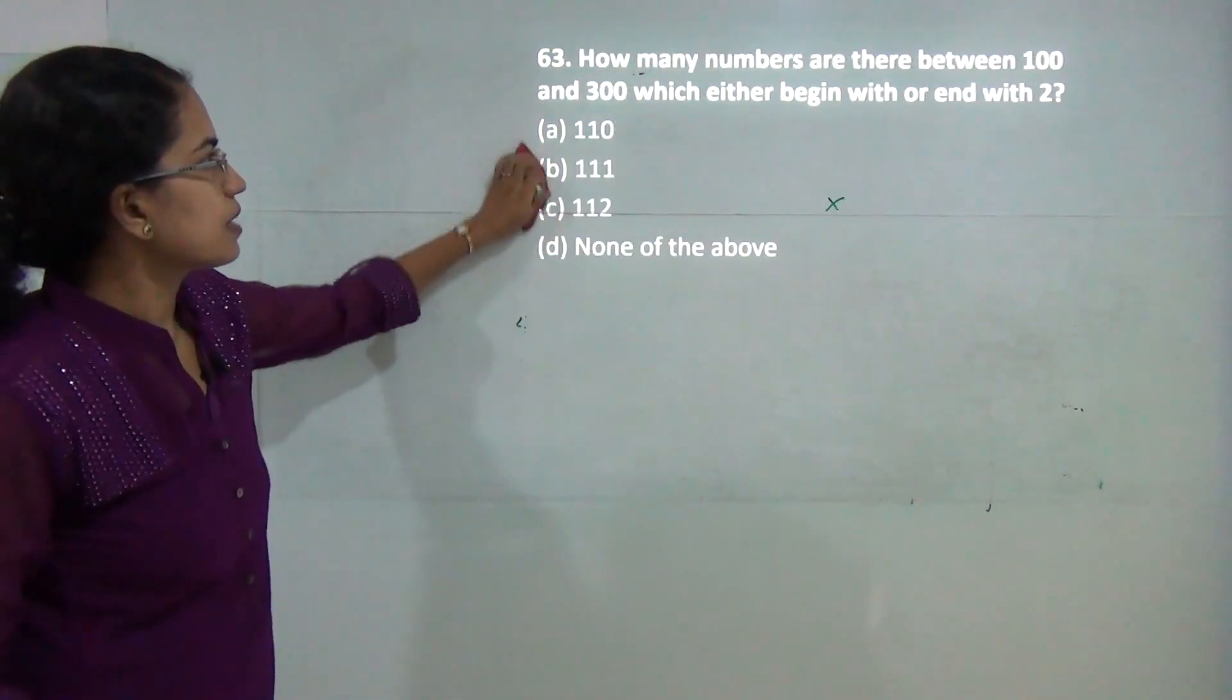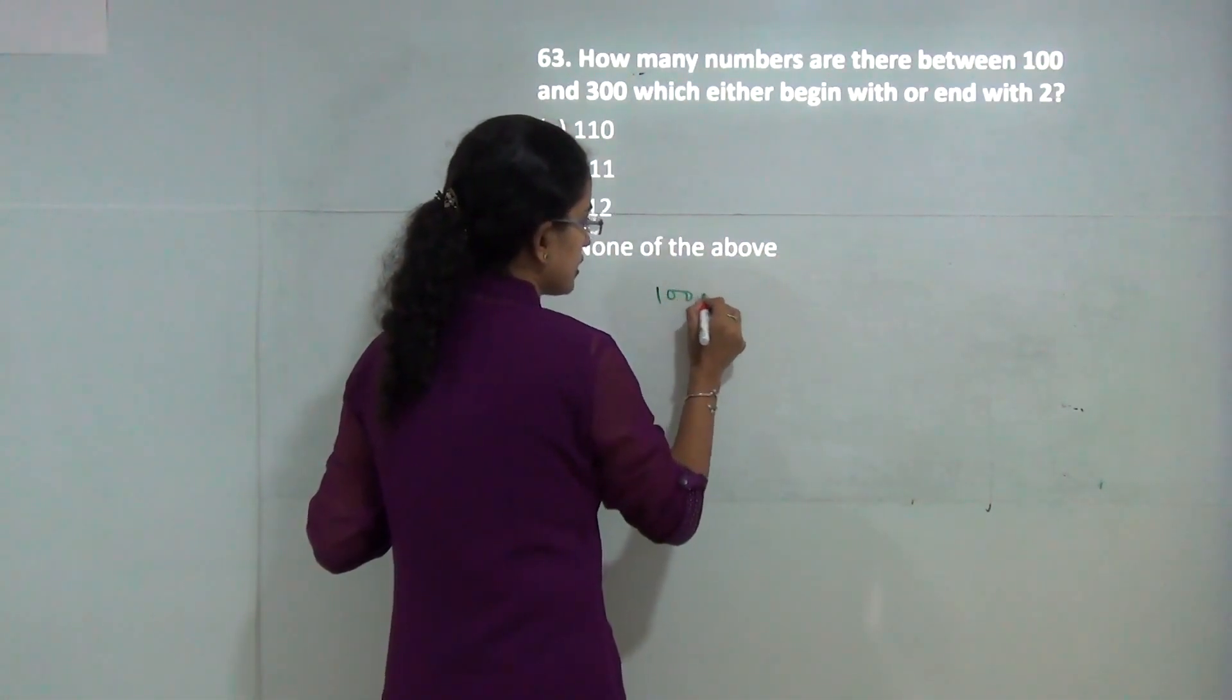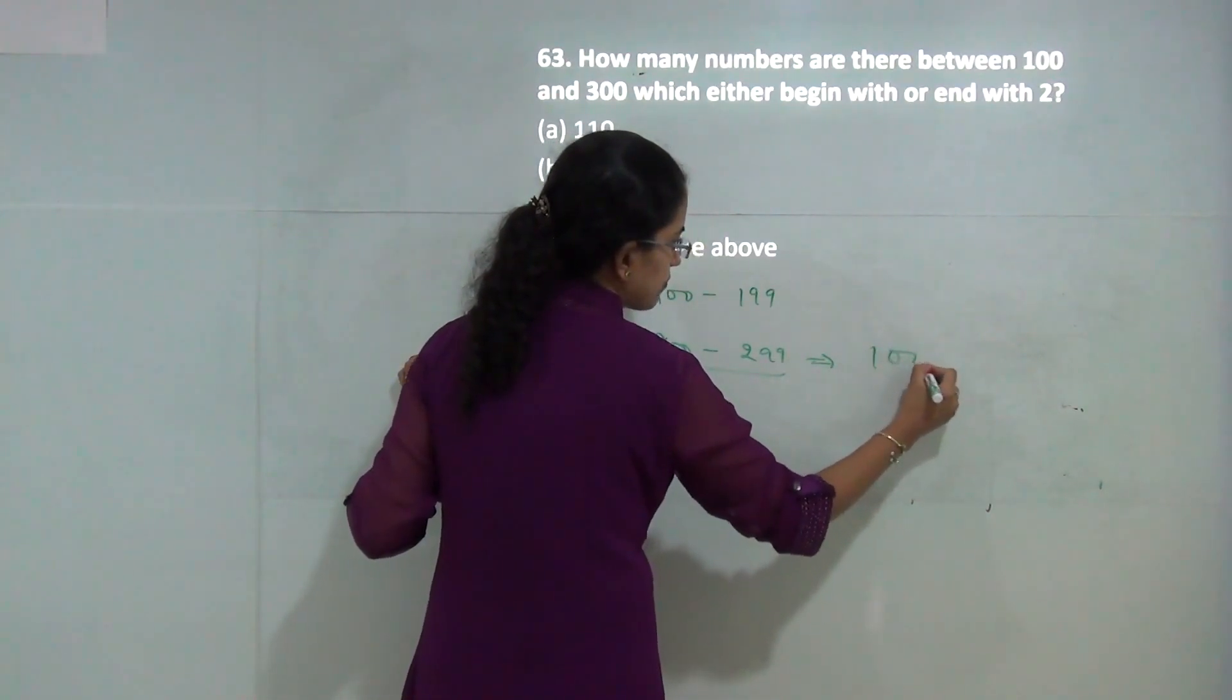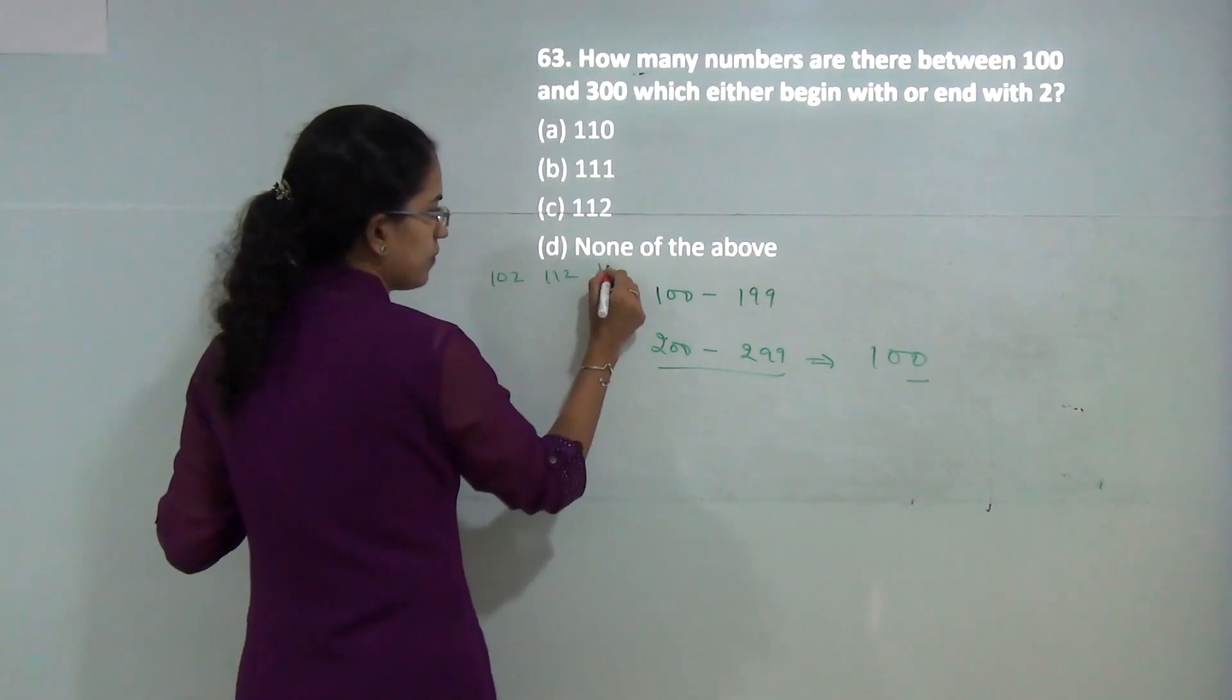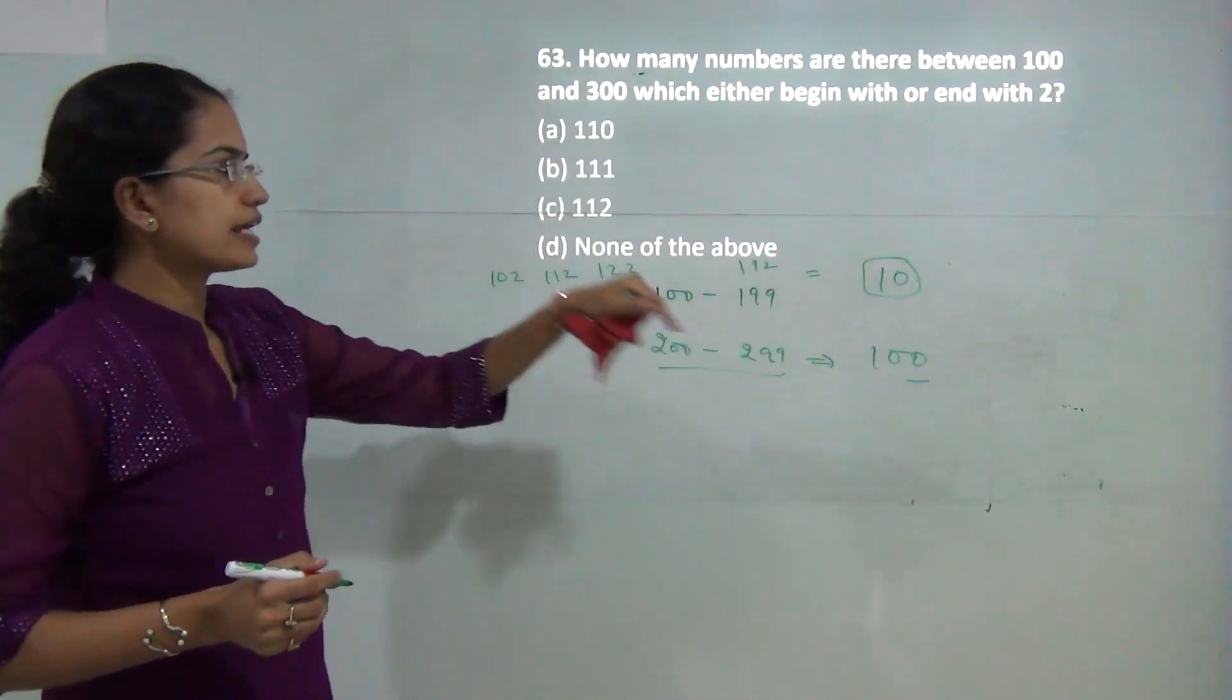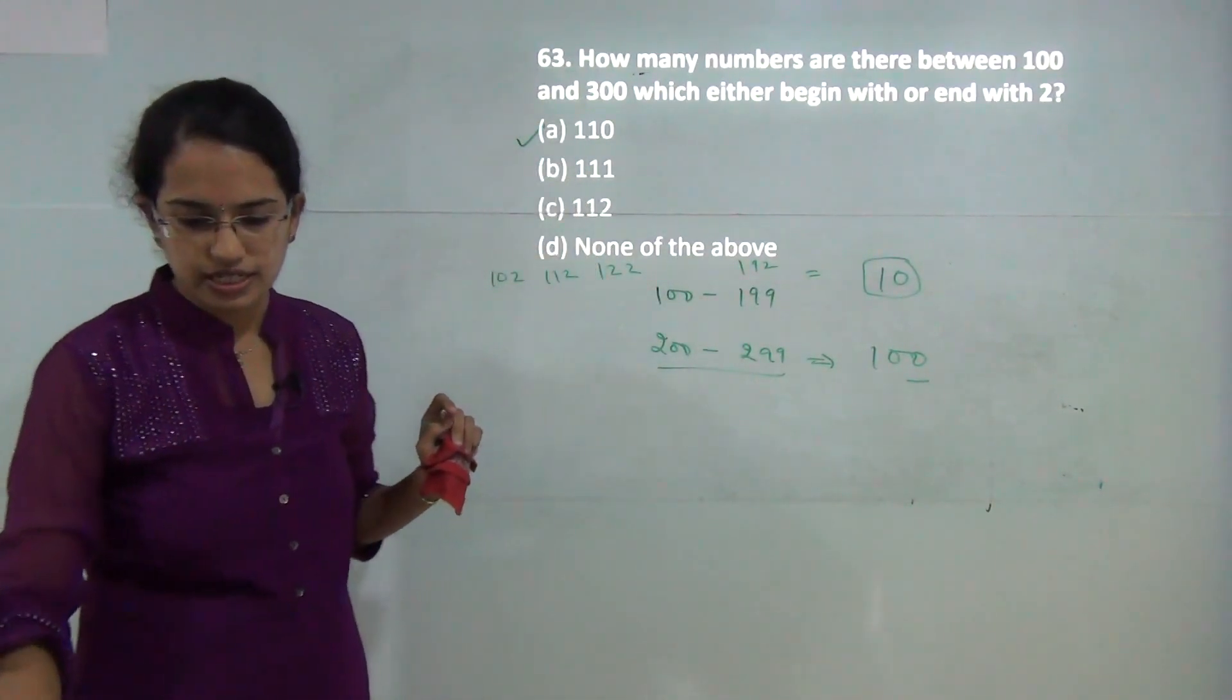How many numbers between 100 and 300 begin with or end with 2? From 200 to 299, there are 100 numbers that begin with 2. From 100 to 199, numbers like 102, 112, 122 up to 192 end with 2, which is 10 numbers. So 10 plus 100 equals 110.